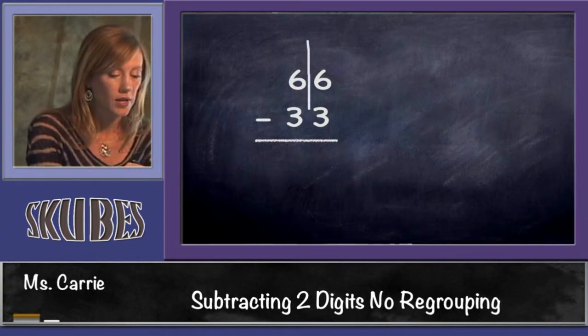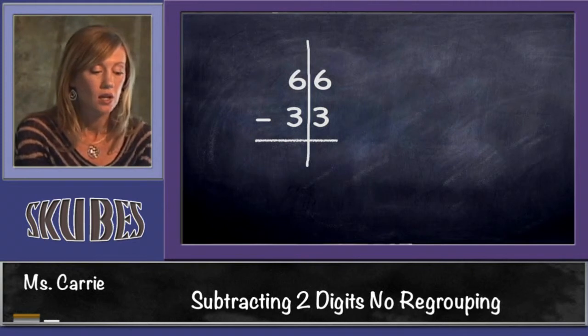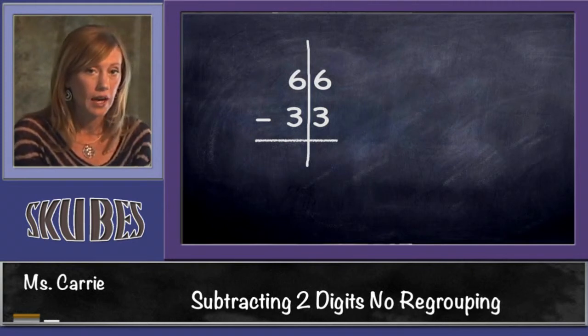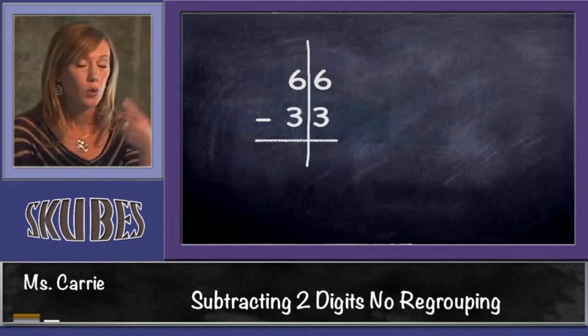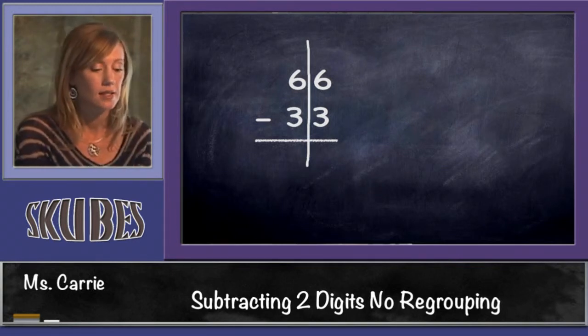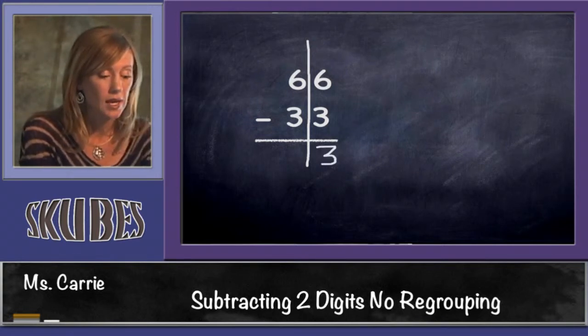Let's try 66 minus 33. Draw our line, separate the tens and the ones, start with the ones. 6 minus 3, let's do what we just talked about, the counting up method. We're going to start with 3 and count up to 6: 3, 4, 5, 6. Answer is 3. And we know our answer has to be 3 over here because it's the same problem, 6 minus 3. Our answer is 33.